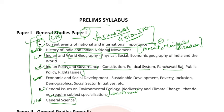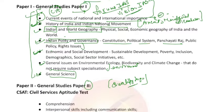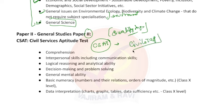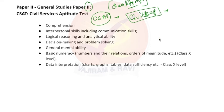GS1 is the main paper, and GS2 — which is CSAT — is of qualifying nature. That means its marks will not be added to your merit, but you have to qualify it. If you are weak in CSAT, there is a channel on YouTube called Civil Staff which is a good channel with a lot of good teachers, and you can do your CSAT preparation free of cost.